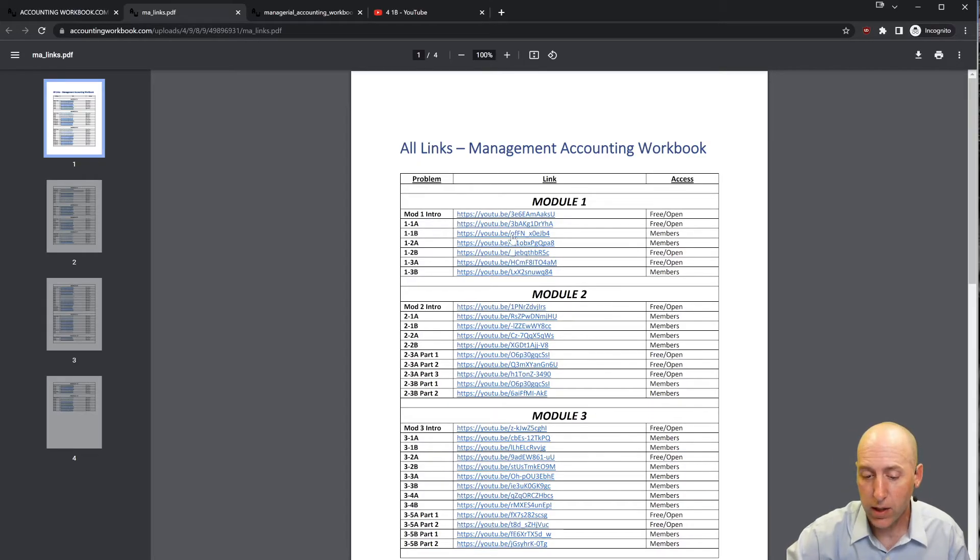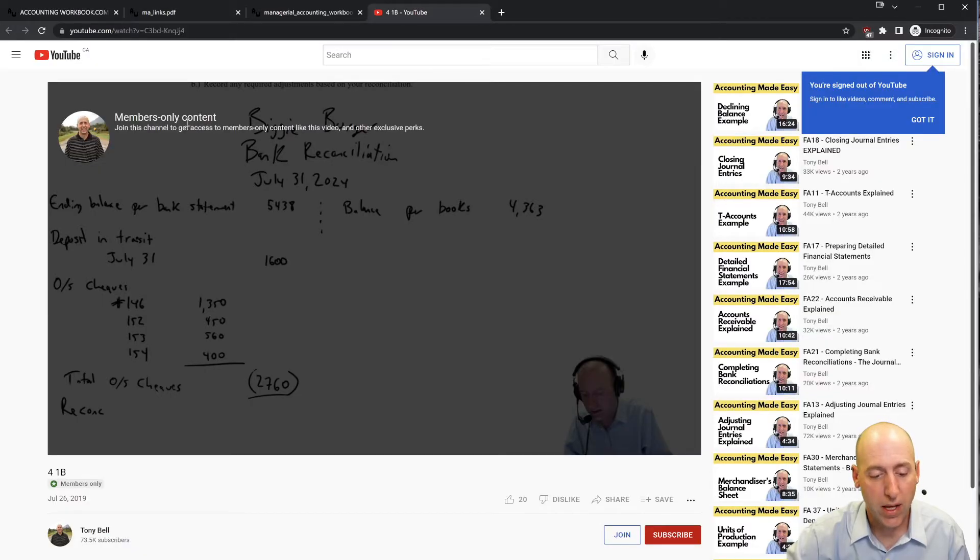If you click one of the members links, it'll take you to a page that shows members-only content. If you'd like access to that content, just hit the join button. Okay, let's jump into the problem.